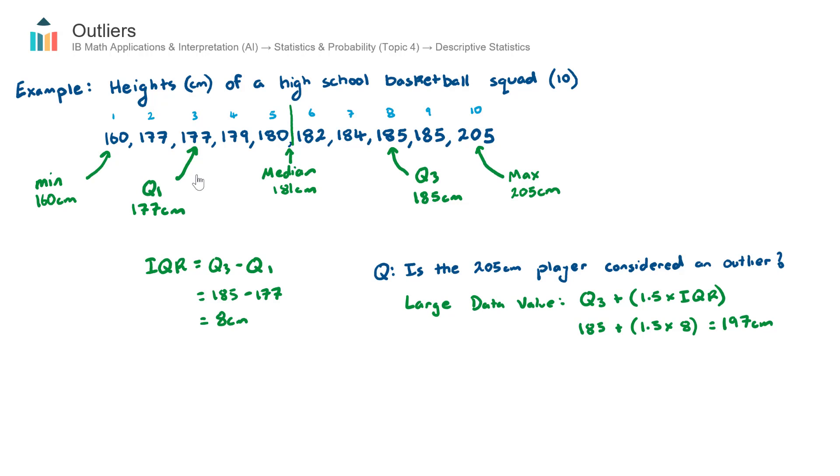So what this means is if a player in this team is above 197 centimeters, which is the case for our 10th player here, this player would be considered an outlier. If they're 197 centimeters or less they would not be considered an outlier. So that's it for large values.